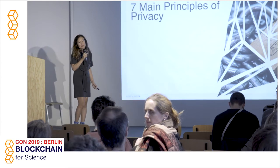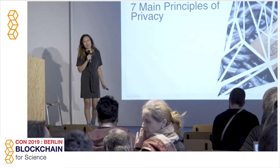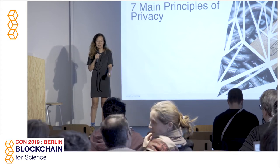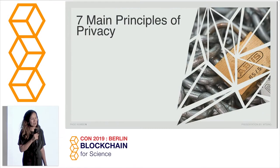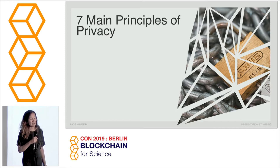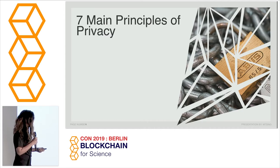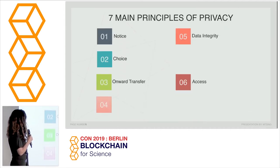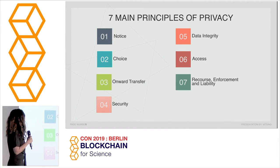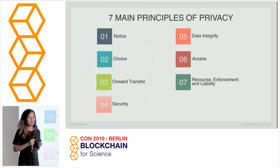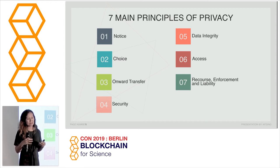We're going to go over some of the basic principles of privacy that I think everyone knows now, then we're going to talk about some laws in California and also in Europe, and then we're going to dive into blockchain and the intersection of data privacy and blockchain. There are seven principles of privacy. Since we're in Germany, I think every one of you knows this. It's really important to understand these concepts because when you're building products and working on data, it's nice to architect your system around them.